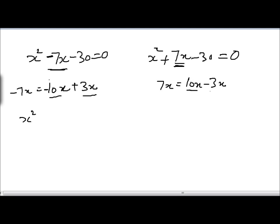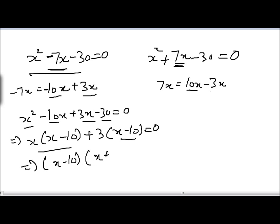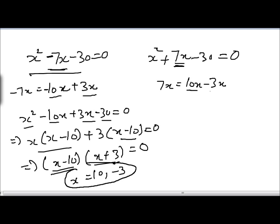So we write the equation as: x squared minus 10x plus 3x minus 30 equals 0. We take x common from the first two terms, giving x minus 10 in brackets. We take 3 common from the last two terms, also giving x minus 10 in brackets. Taking x minus 10 common from both groups gives x plus 3 equal to 0. Setting each factor to zero: x equals 10 and x equals minus 3. This is the solution of this quadratic equation.